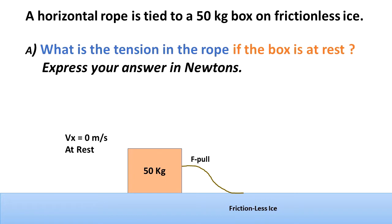Case A: What is the tension in the rope if the box is at rest? Express your answer in Newtons. We see in the picture that the box is at rest on a flat surface — the initial velocity is zero because it is at rest and in static equilibrium.